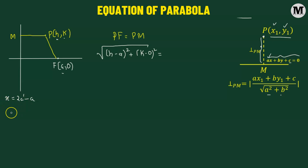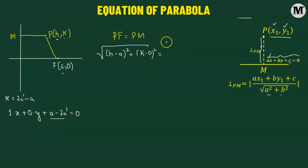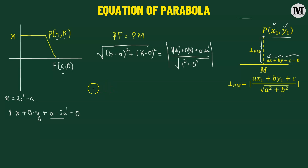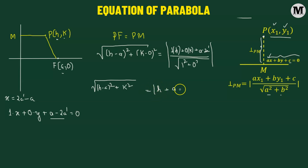Let's rewrite the directrix equation in standard form. We have x equals 2a prime minus a, which becomes 1 times x plus 0 times y plus a minus 2a prime equals 0. Applying the perpendicular distance formula, PM equals the absolute value of 1 times h plus 0 times k plus a minus 2a prime, divided by the square root of 1 squared plus 0 squared. Setting PF equal to PM and squaring both sides gives: h minus a squared plus k squared equals h plus a minus 2a prime whole squared.